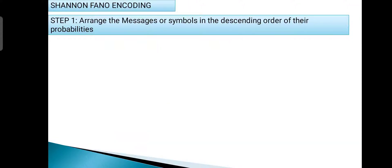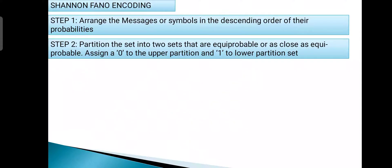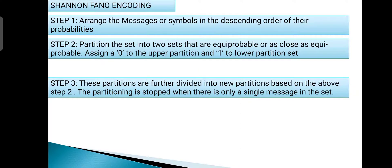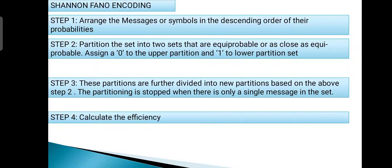Now we will see the algorithm employed in Shannon-Fano encoding. Step 1: Arrange the messages or symbols in the decreasing order of their probabilities. Step 2: Partition the entire set of probabilities into two sets that are equiprobable or as close to equiprobable as possible. Assign binary 0 to the upper partition set and binary 1 to the lower partition set. These partitions are further divided into new partitions based on the same rule. The partitioning is stopped when there is only a single message in the set. Finally, we can calculate the efficiency.